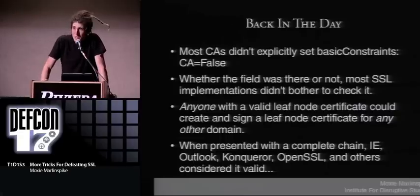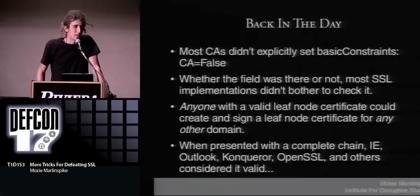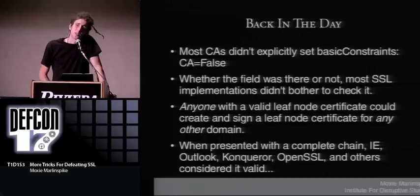What this meant was that anyone with a valid leaf node certificate for any domain could create and sign a leaf certificate for any other domain. It essentially meant that anyone who had a valid leaf node certificate had a CA cert. And when presented with this complete chain, Internet Explorer, Konqueror, Outlook, OpenSSL, and many different SSL implementations all considered it completely valid.